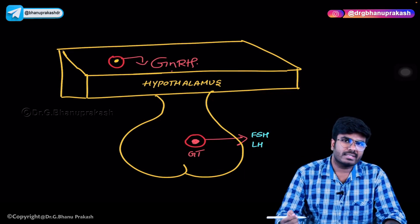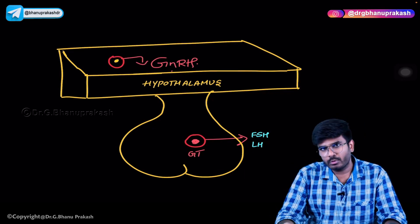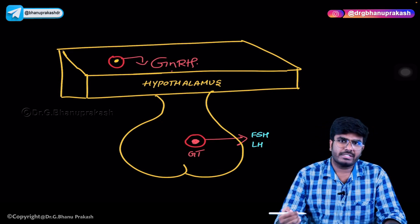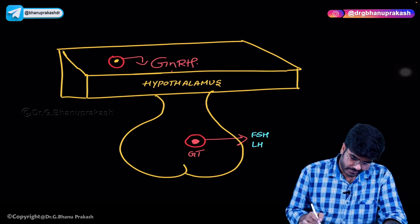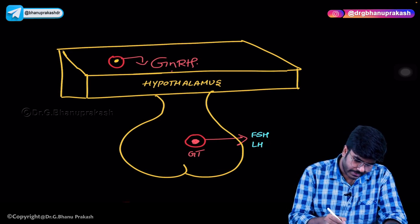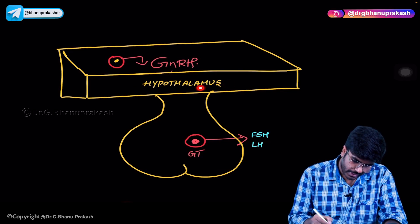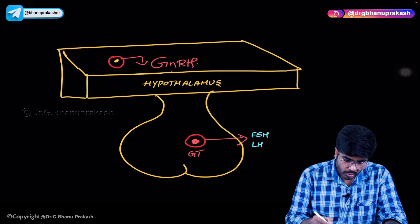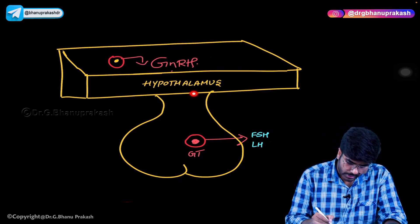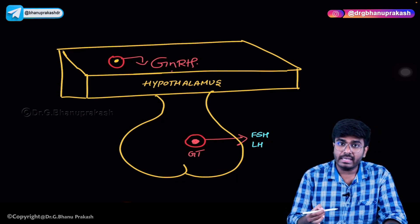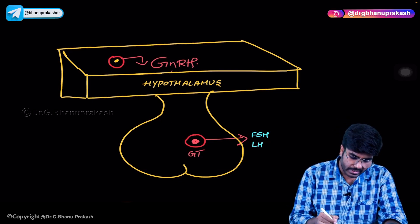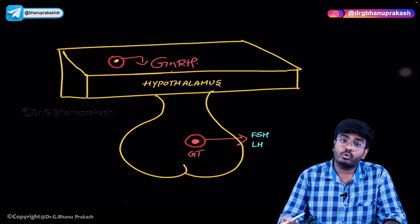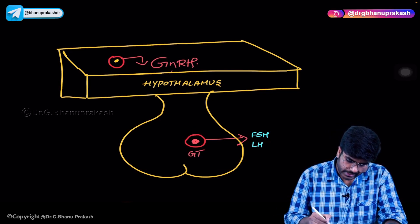Welcome back. In this video let's discuss gonadotropin releasing hormones, gonadotropes, and their pharmacological integration. We have already seen in the previous video that from the hypothalamus, gonadotropin releasing hormones are produced. These GnRH hormones travel to the anterior pituitary via the hypothalamo-hypophyseal portal system, and GnRH acts on the gonadotropes in the anterior pituitary.